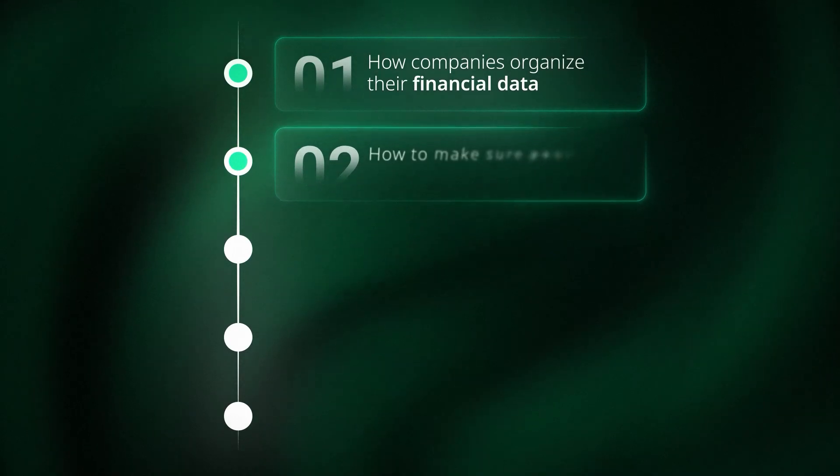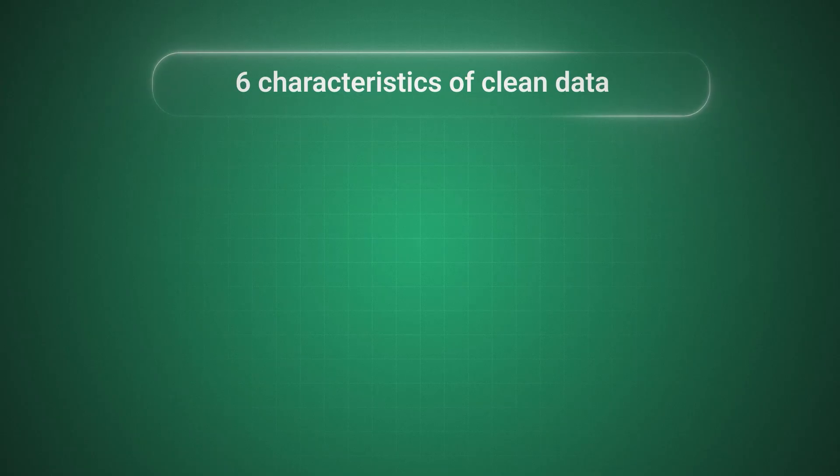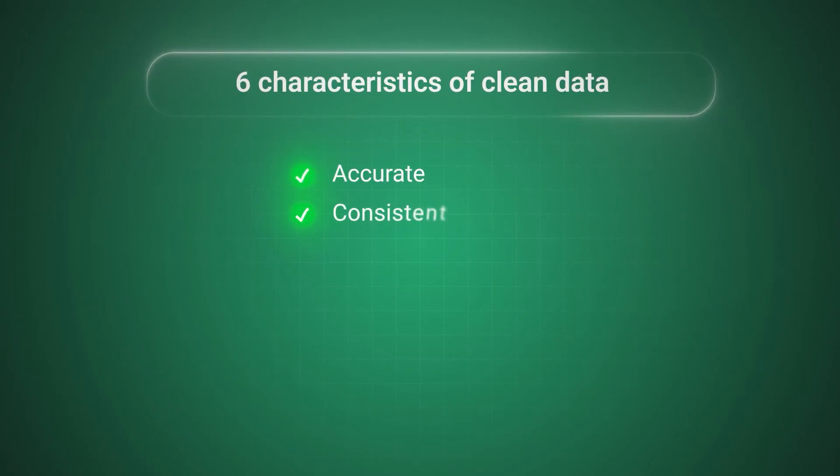Now that you understand how data is organized, let's talk about making sure your data is actually clean, because dirty data will mess up every analysis you try to do. There are six characteristics that clean data needs to have. First, it needs to be accurate — free from errors. This is especially important for anything entered manually, like headcount data or prospect information in your CRM. Second, it needs to be consistent — same tracking methods across different data sets and over time. You can't compare how a metric changed over years if you've been tracking it differently each year.